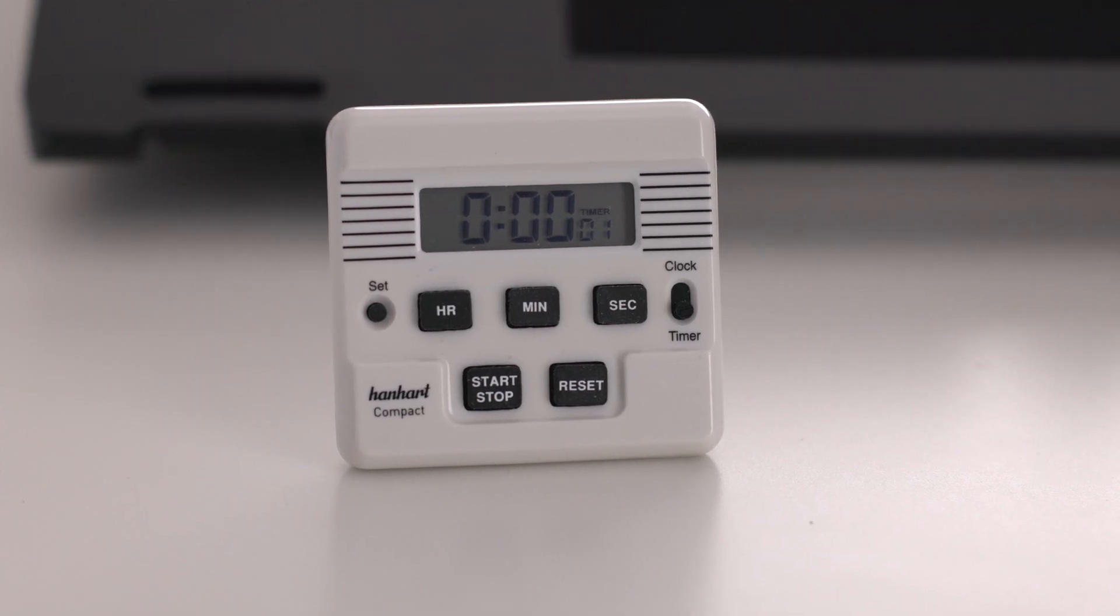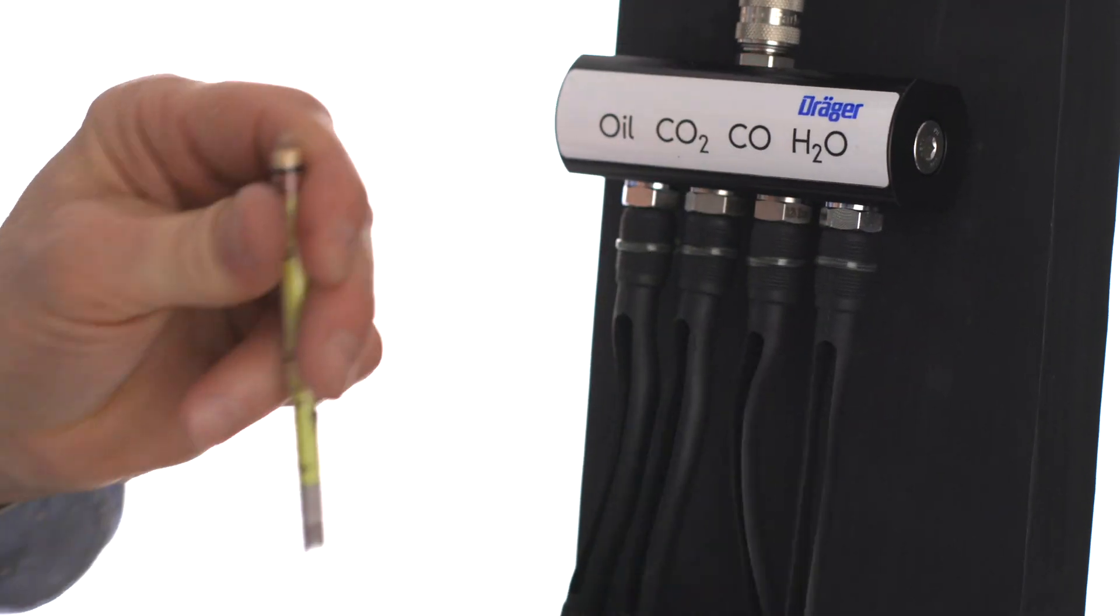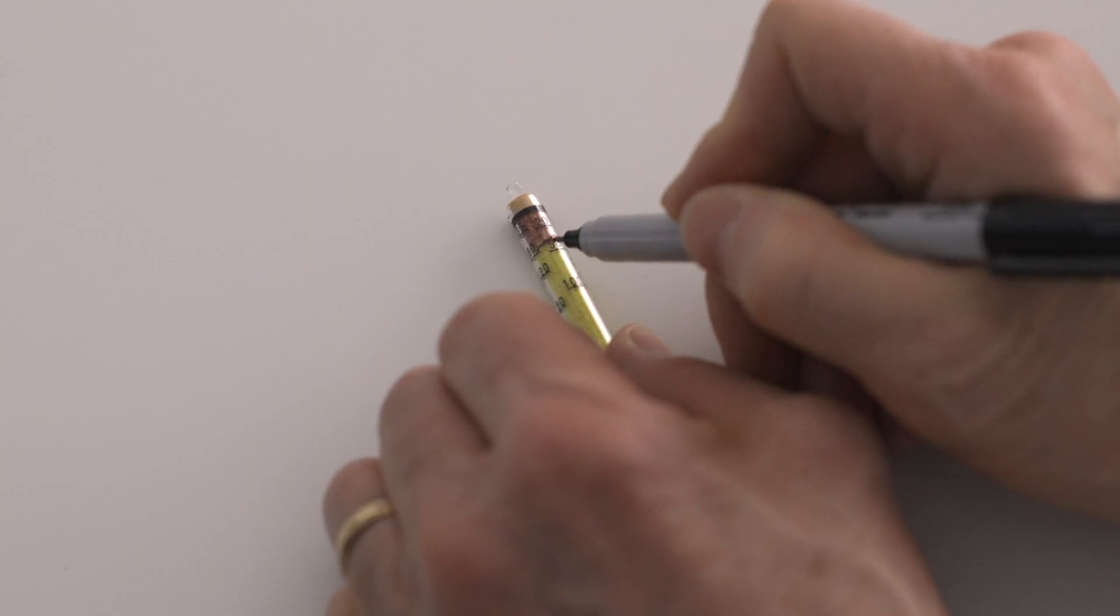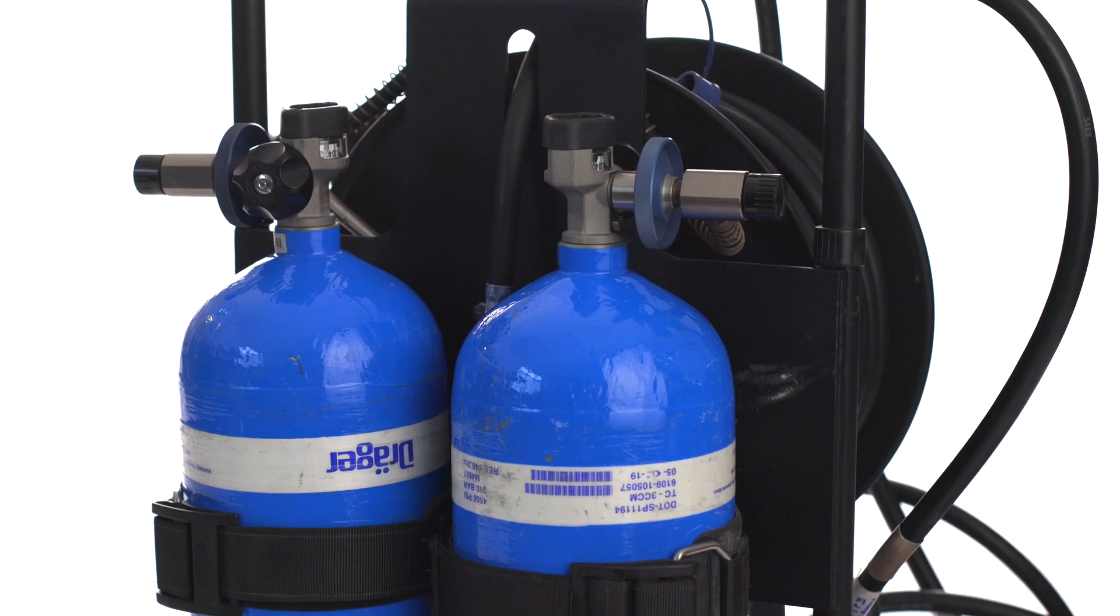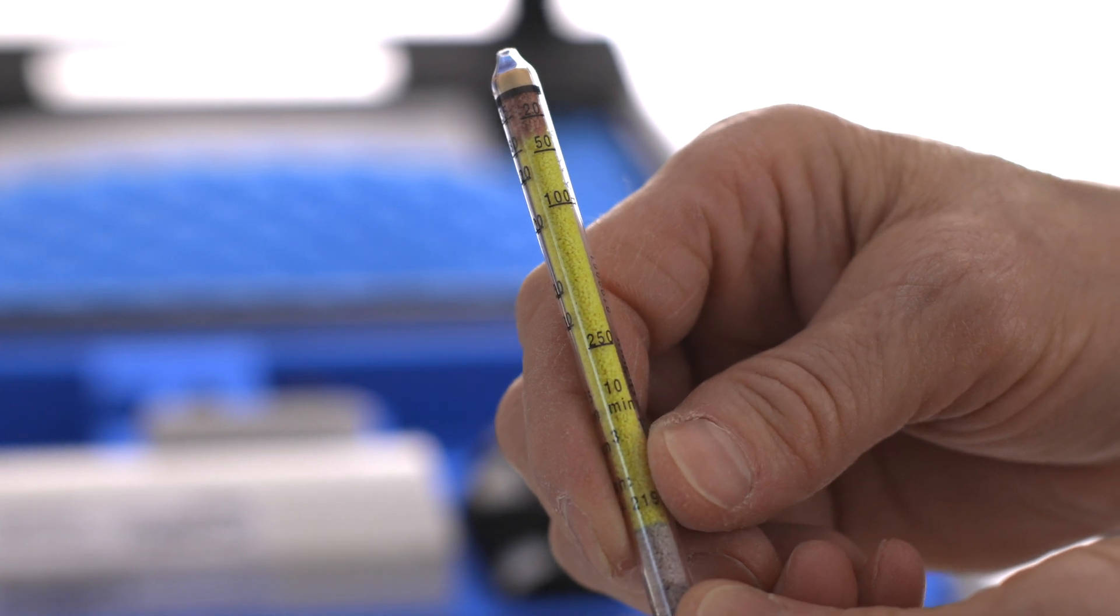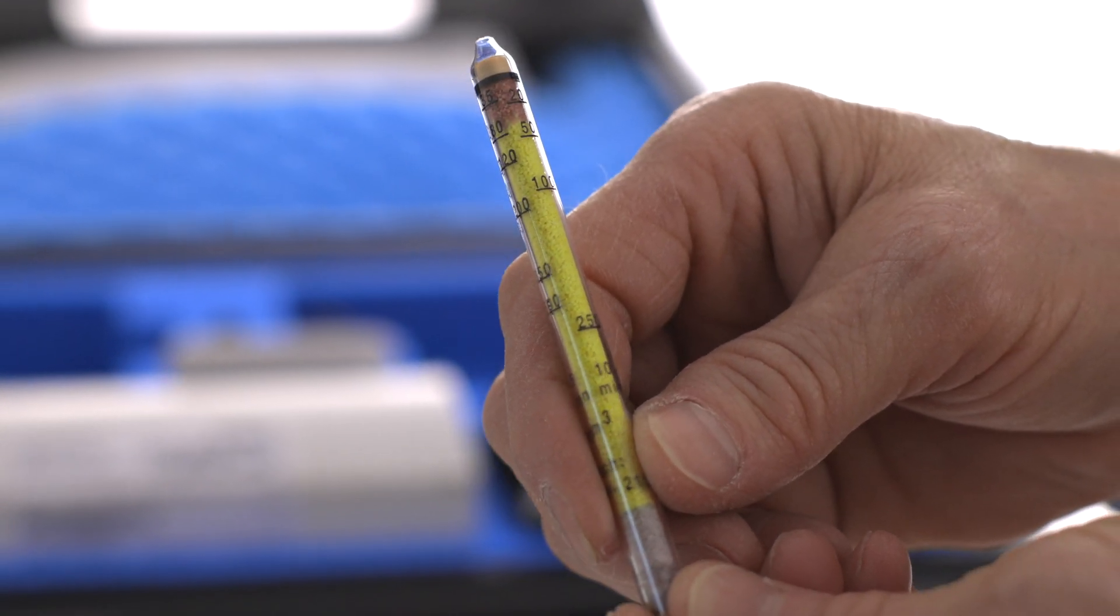When the second alarm goes off, remove the water vapor tube and immediately evaluate the reddish-brown discoloration on the tube. Compressed breathing air requires the use of a 10-minute test with acceptable results between 20 and 250 mg of water per cubic meter. This tube shows a discoloration of 35 mg of water per cubic meter.